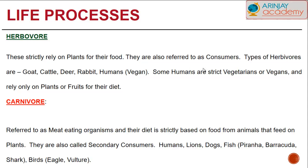Carnivores are referred to as meat-eating organisms. Their diet is strictly based on food from animals that feed on plants, and they are referred to as secondary consumers. Humans, lions, dogs, fish like the piranha or the barracuda, sharks, and certain birds like eagles and vultures are classified as carnivores.